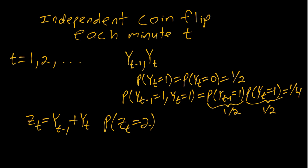So the probability that zt equals two is the same as the probability that both yt minus one and yt came up heads, which is exactly what we just computed. And we saw that indeed that probability is one fourth, regardless of t.